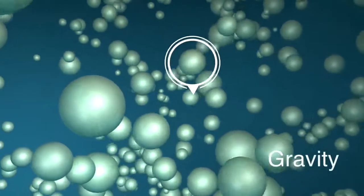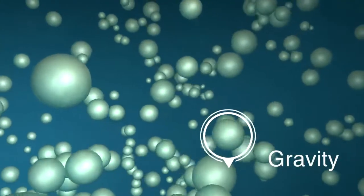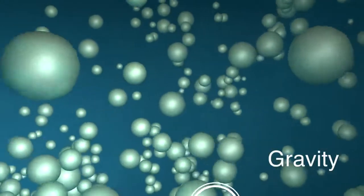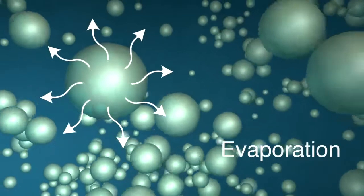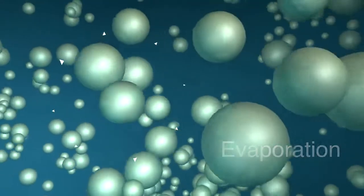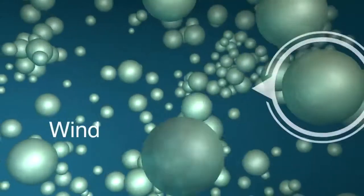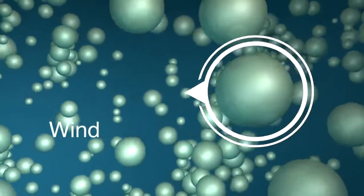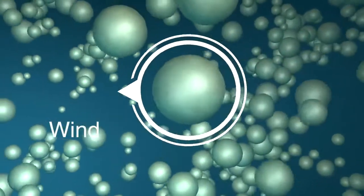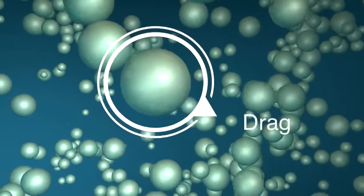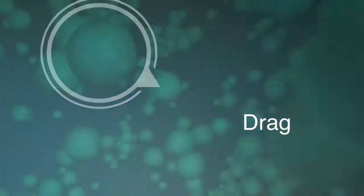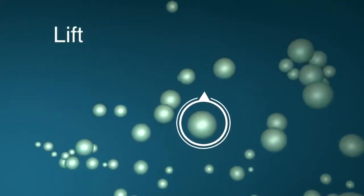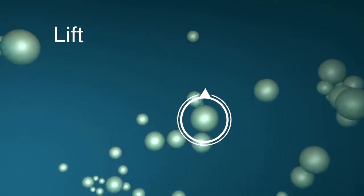Gravity pulls the droplet down out of the air. Evaporation makes droplets smaller. Wind will move droplets. Drag will slow droplets. Lift, which is rising air, carries small droplets upward.